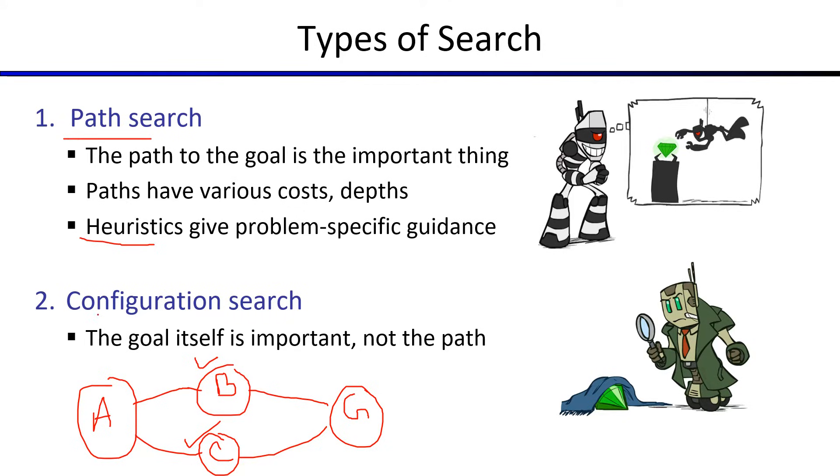Another type of search is configuration search, where the path to the goal is not important; rather, what matters is the goal node itself.